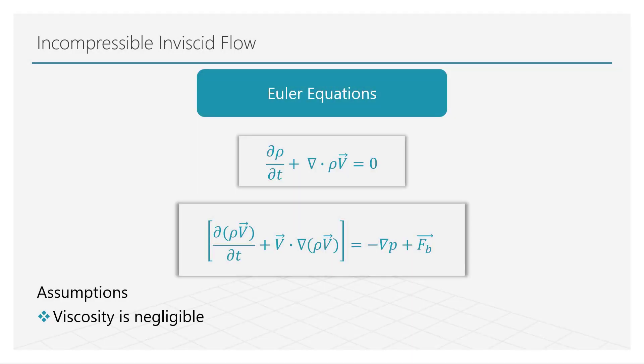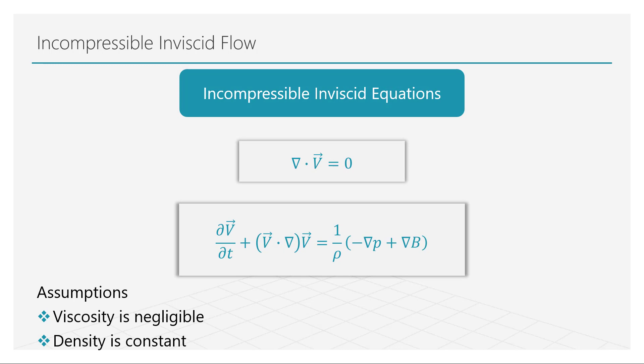Till now, we looked at how the governing equations of fluid motion change under the assumptions of incompressibility and inviscid flow separately. Let us now look at how the equations transform when both of these assumptions are applied simultaneously. Beginning with the Euler equations, if we now impose the condition of constant density — i.e., the flow is incompressible — the mass and momentum equations transform to the following form.